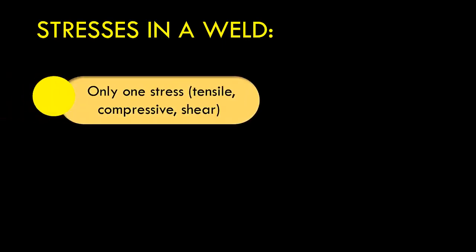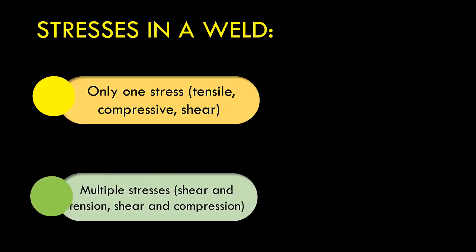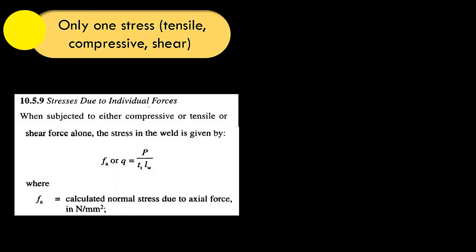For stresses in a weld there are two situations. First, we can have only one kind of stress — it can be tensile, compressive, or shear in nature. Or we can have multiple stresses present; for example, shear as well as tension, shear as well as compression, or shear, tension, as well as a twisting moment. Let us first discuss when we have only one stress. This is covered in clause 10.5.9, which addresses stresses due to individual forces when subjected to either compressive, tensile, or shear forces alone.